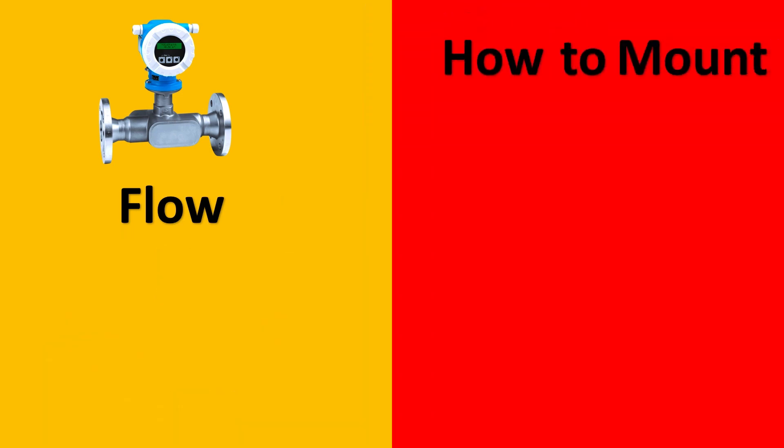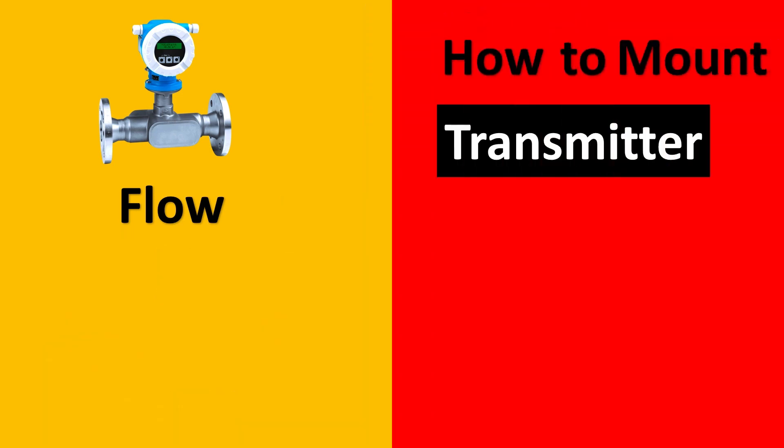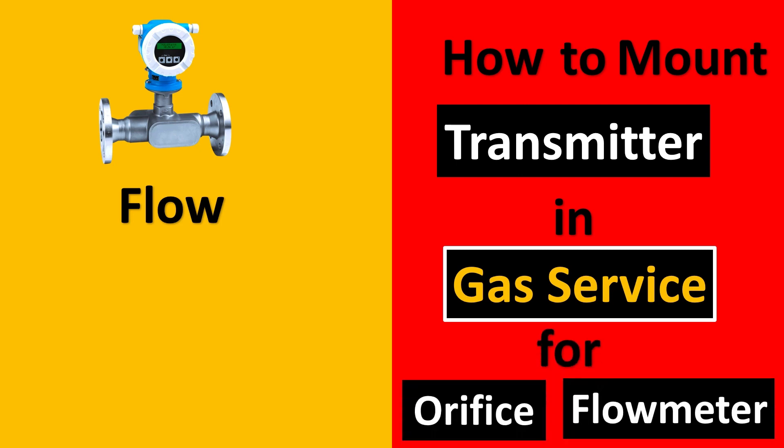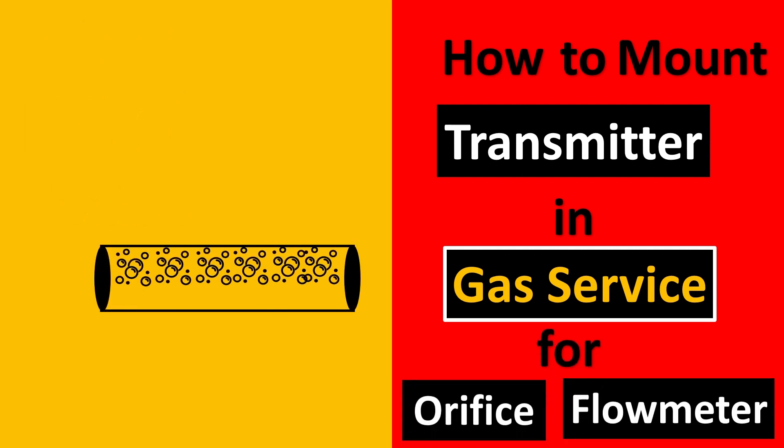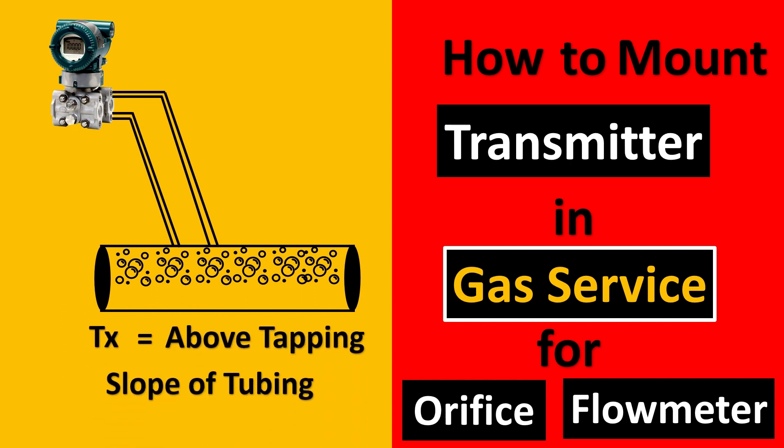In flow, one of the most asked questions is how to mount the transmitter in gas service, especially for orifice flow meters. So let's take this example. Here's your pipe and here's gas flowing through it. Now the transmitter is put on top of the pipe or top of the tapping and the second thing which is important to note here is that the slope of the tubing has to be towards the pipe.